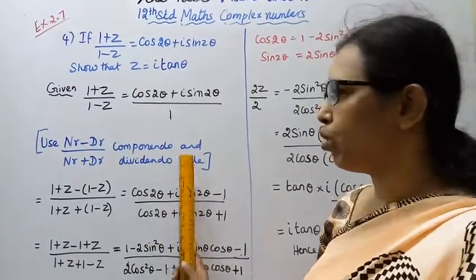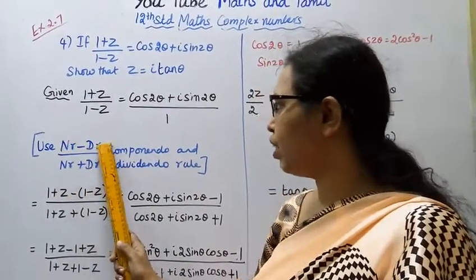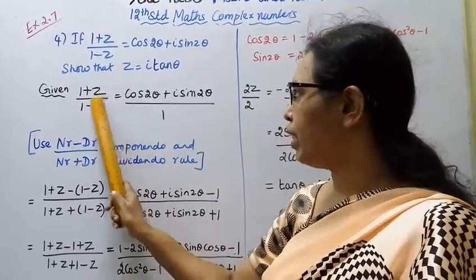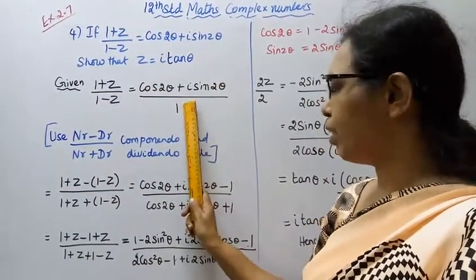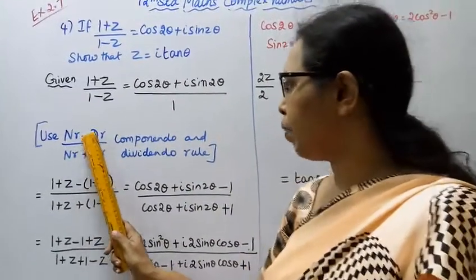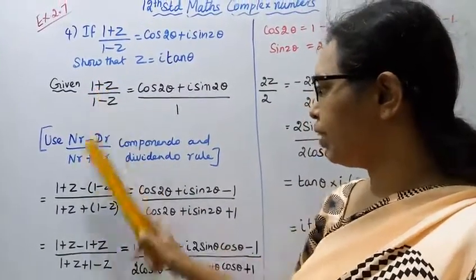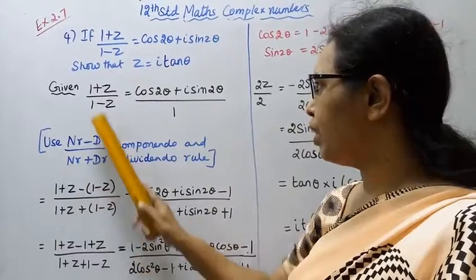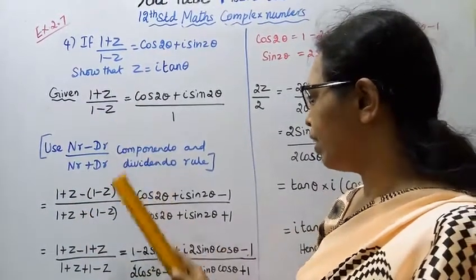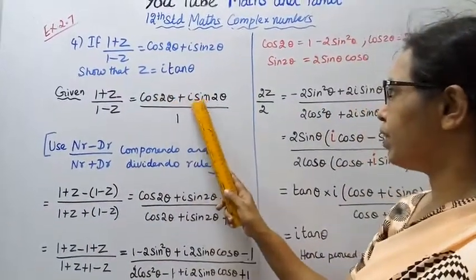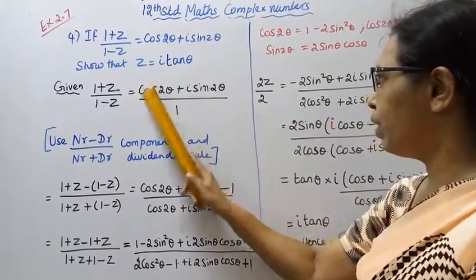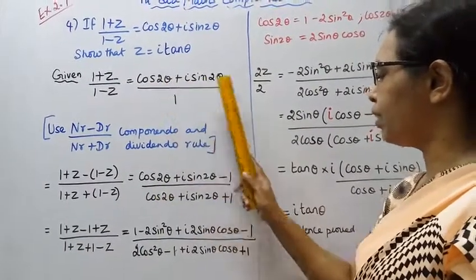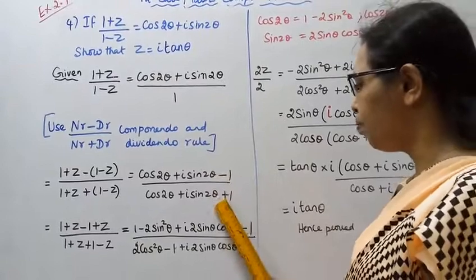We apply the componendo-dividendo rule: that is, numerator minus denominator by numerator plus denominator. So (1+z) − (1−z) divided by (1+z) + (1−z) equals (cos2θ + i·sin2θ − 1) divided by (cos2θ + i·sin2θ + 1).